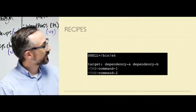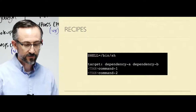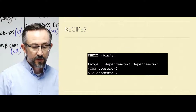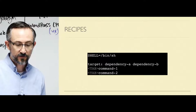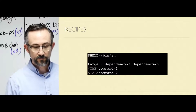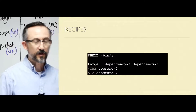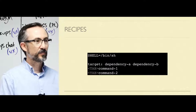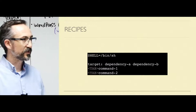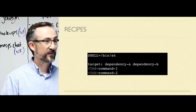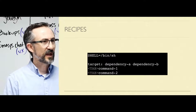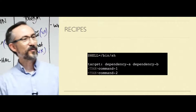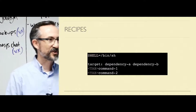Let's talk about recipes for a minute. These are the commands that run when a target is considered out of date. Commands must start with a tab character. If your editor indiscriminately changes tabs to spaces, you'll want to fix that when you work in a Make file. Otherwise, things will not work and you will have no indication why. Make gives you almost no helpful information about that.